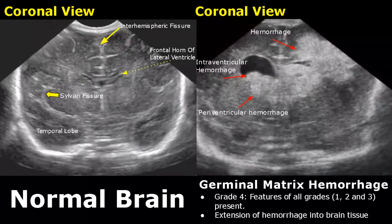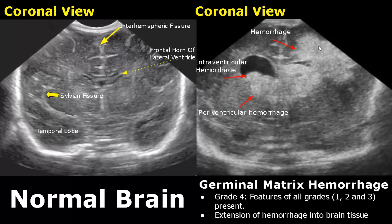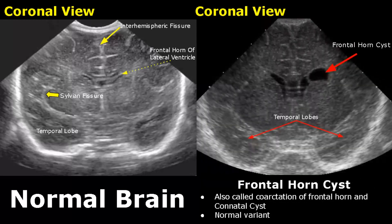In grade four hemorrhage, all features of grades one, two, and three are present. Furthermore, there is extension of hemorrhage into the brain tissue — the hemorrhage is present in the cerebral cortex.